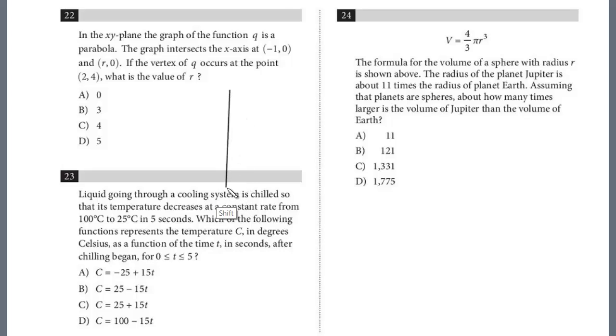This will be our xy-coordinate plane. For our first point, we have both coordinates, negative 1, 0. This is negative 1, 0. Just from this, we don't know if the parabola opens up or down. We don't know if the other coordinate is on this side or this side.